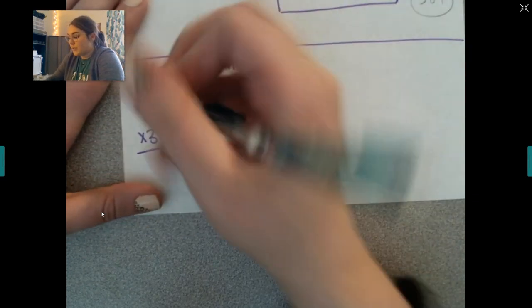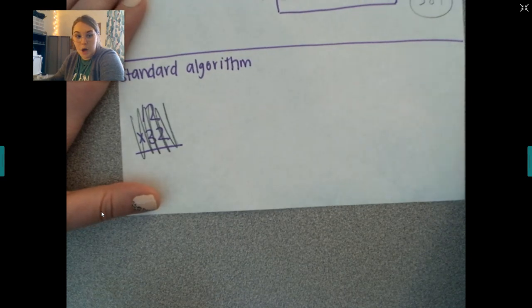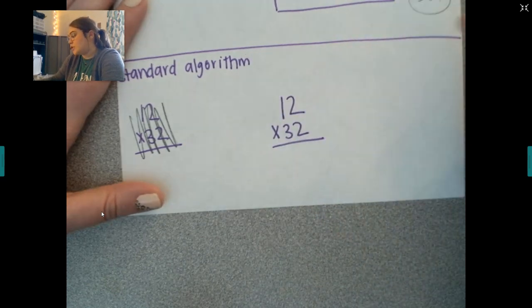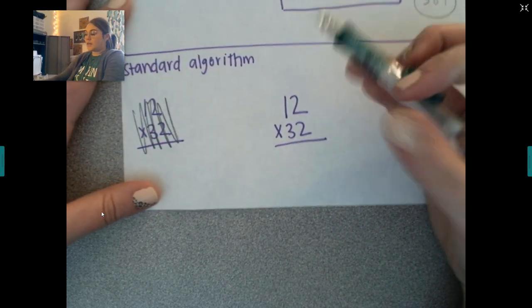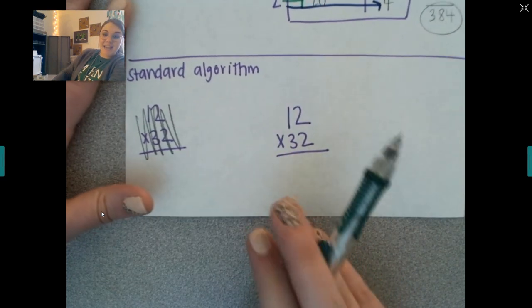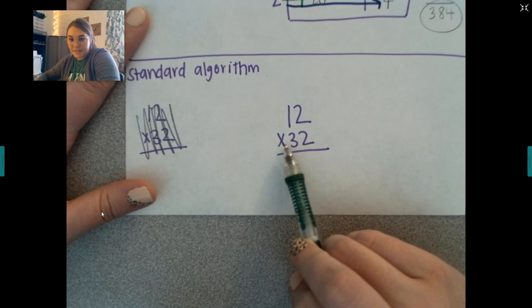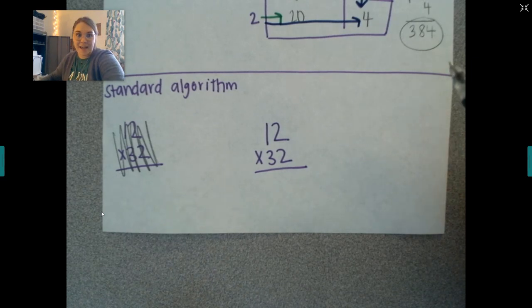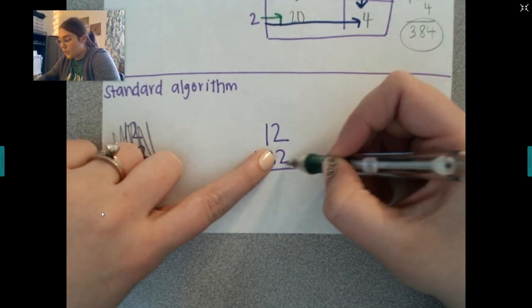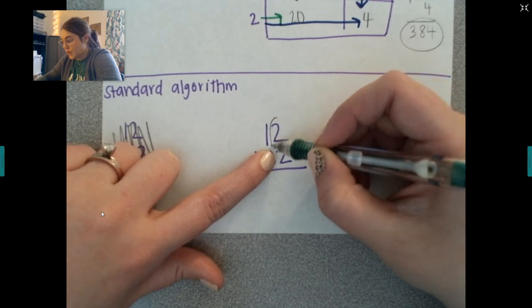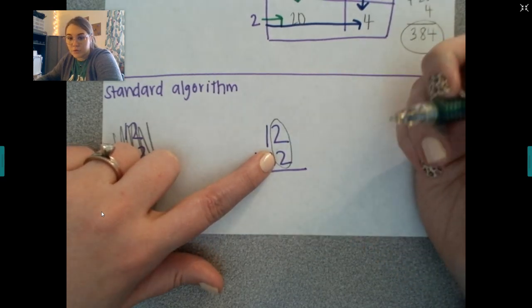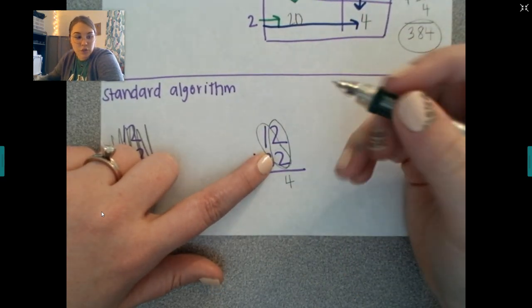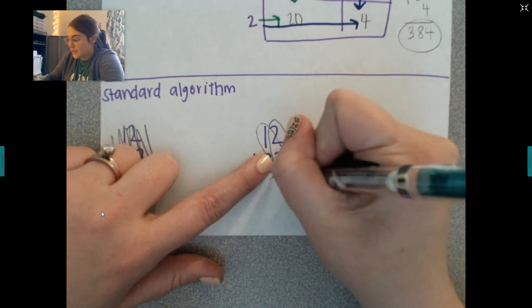So let's go ahead and move on to standard algorithm. Standard algorithm is how your parents learned it. So if your parents help you at home, this is probably how you do it. So let's go ahead and write it a little bit bigger. So when we're doing this, we always start right to left. Same thing down here. Right to left. Now which is weird because we read from left to right but we multiply right to left. So we're going to start with our one's place and this one's place. So you're going to do your one's place first. So what's two times two?